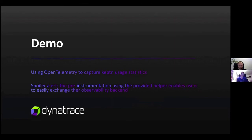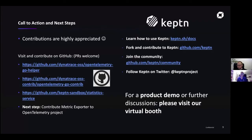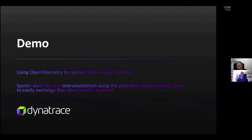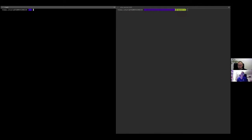During the following demonstration, we will firstly deploy the Captain statistics service to export metrics to a Prometheus endpoint and display this data. Afterwards, we will reconfigure the service to use Dynatrace as a backend. The OpenTelemetry Go helper uses environment variables to decide which exporter to use. As the statistics service is running on Kubernetes and we use credentials for Dynatrace, we created a secret called 'opentelemetry' to pass the environment variables to the pod. First, we will create a secret for using Prometheus.